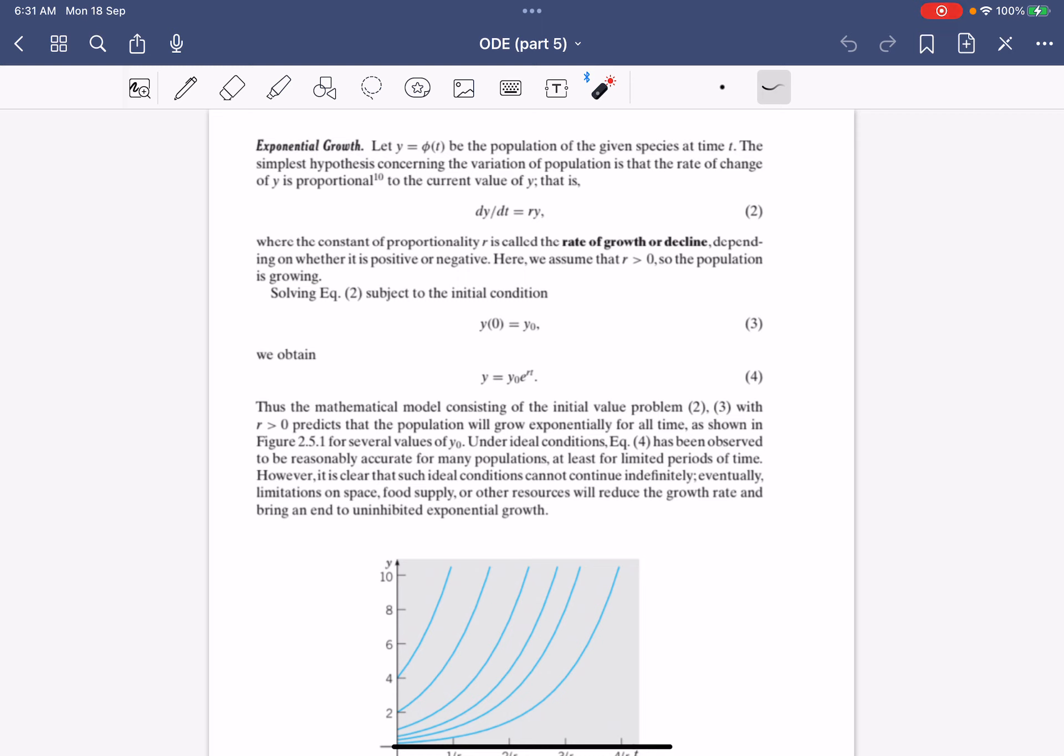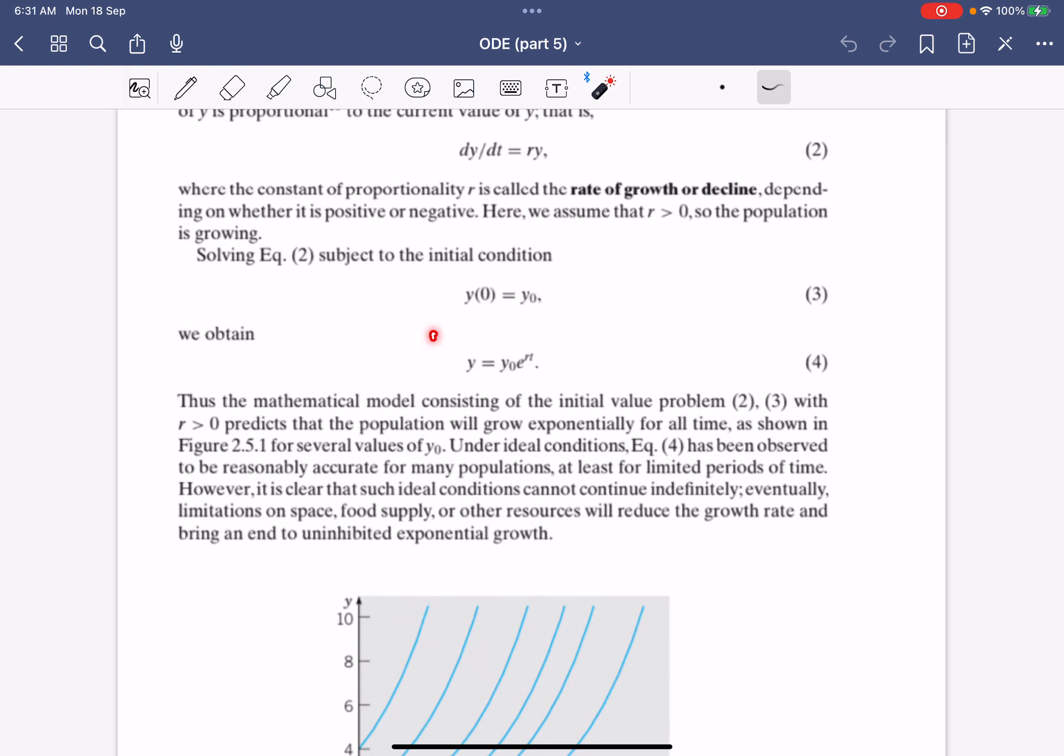The simple hypothesis is that the rate of change of the population is proportional to the population size. So it's dy/dt equals ry, and if you solve it, the reason it's called exponential is because in the end you'll get it to be an exponential function.